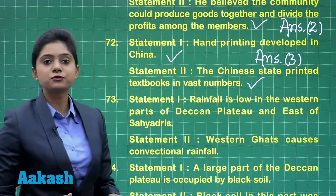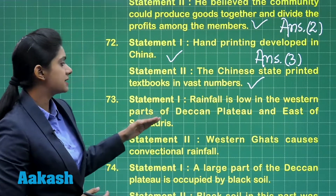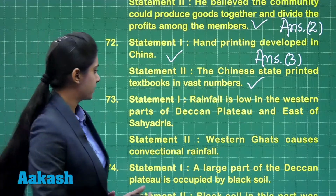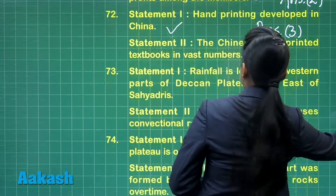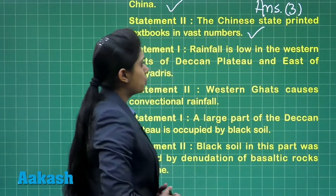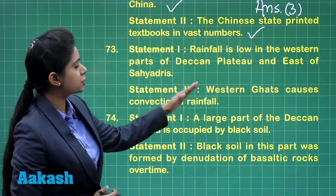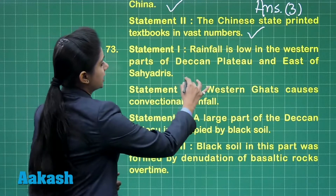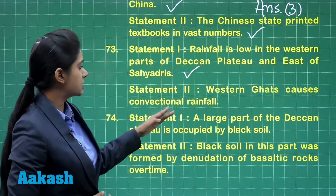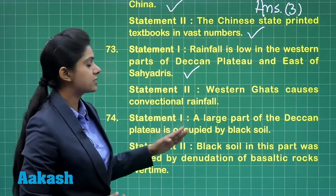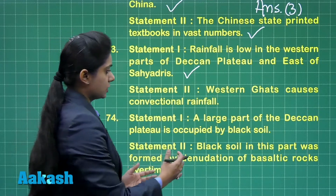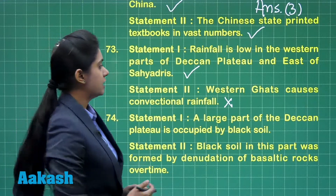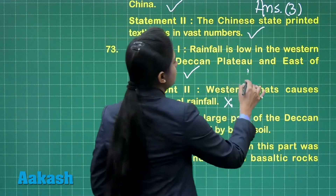Question 73: The first statement says rainfall is low in the western parts of the Deccan Plateau and east of the Sahyadris — this is a correct statement. The second statement says the Western Ghats causes convectional rainfall — this is an incorrect statement. So our answer here is option number one.